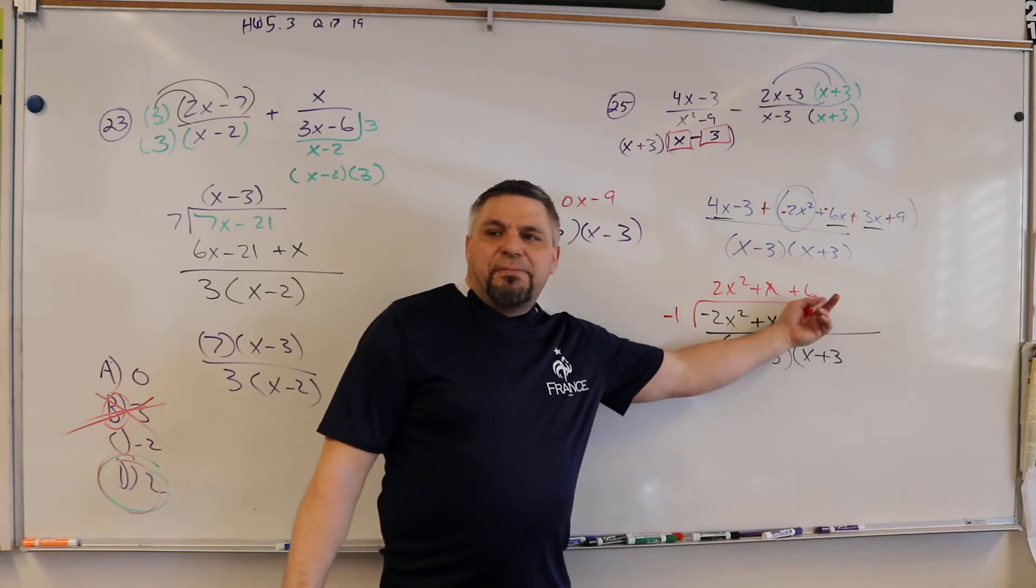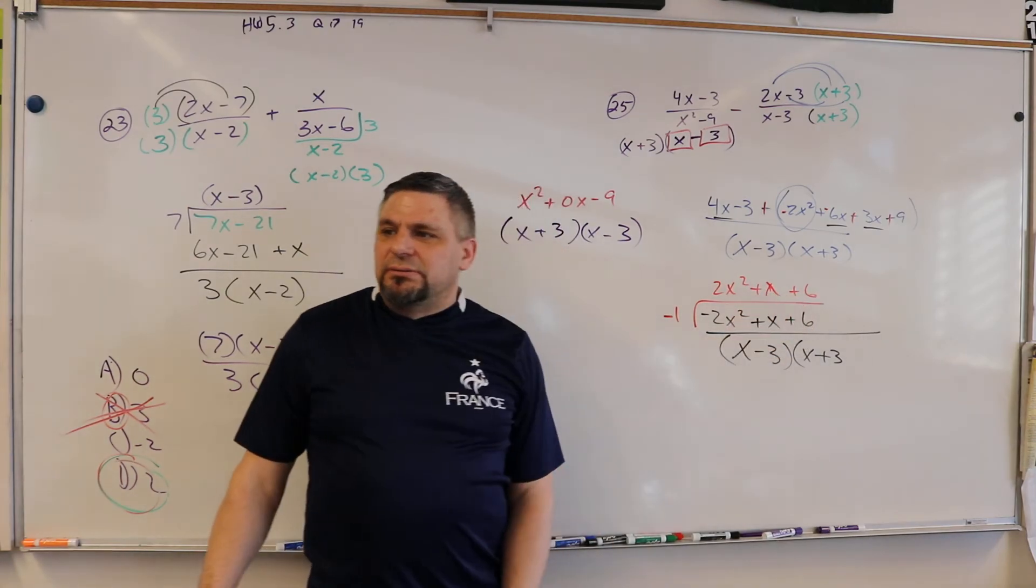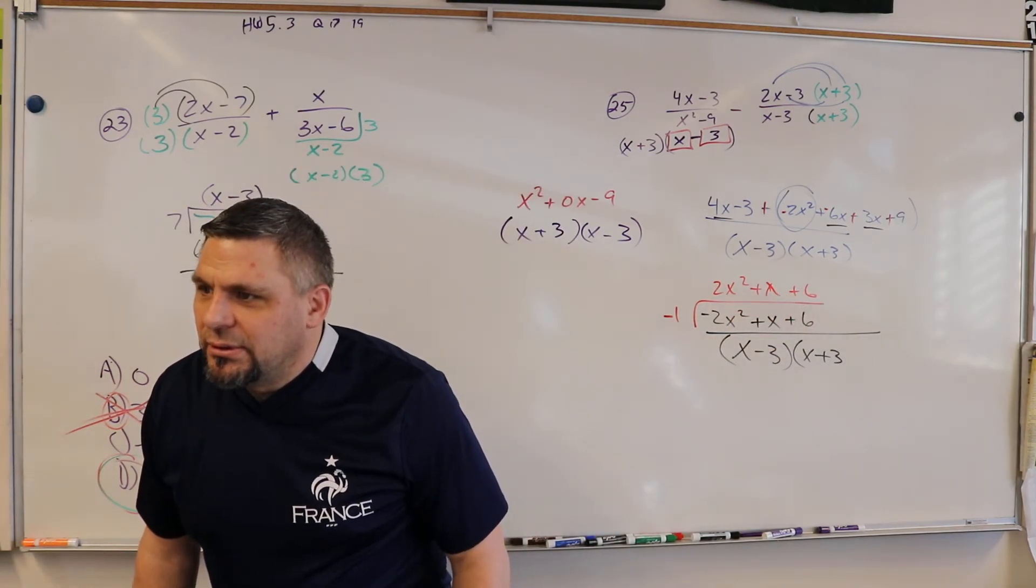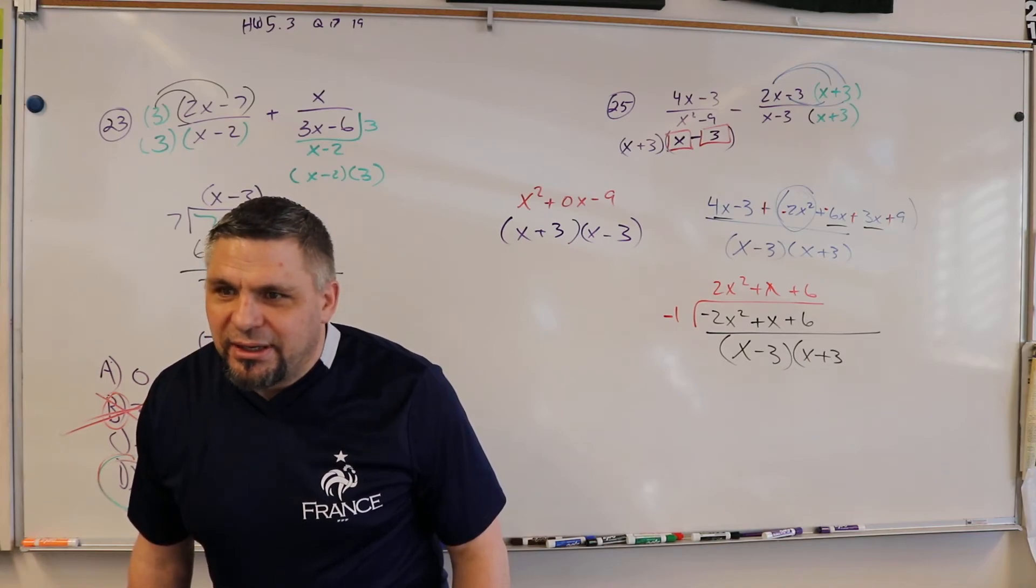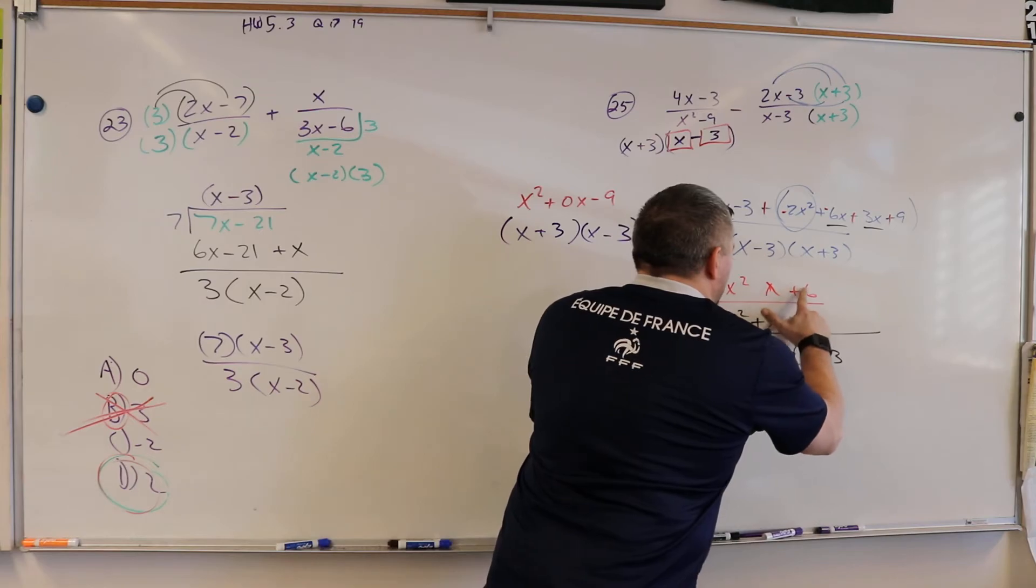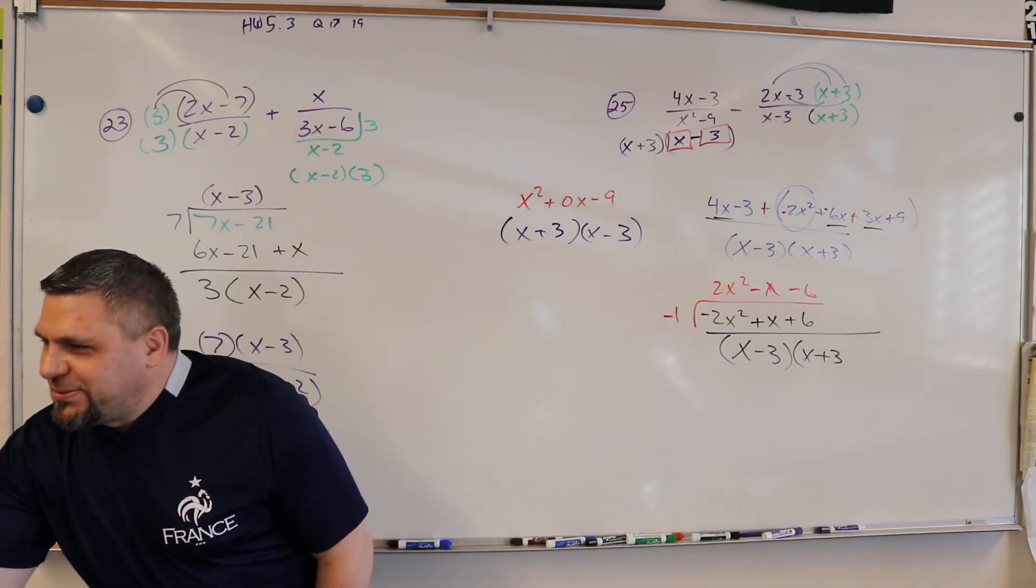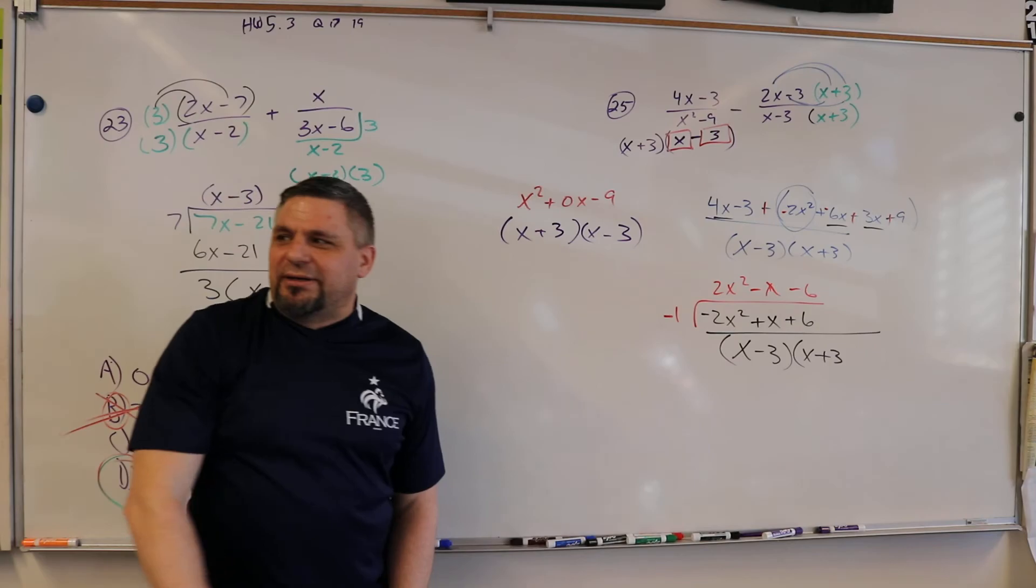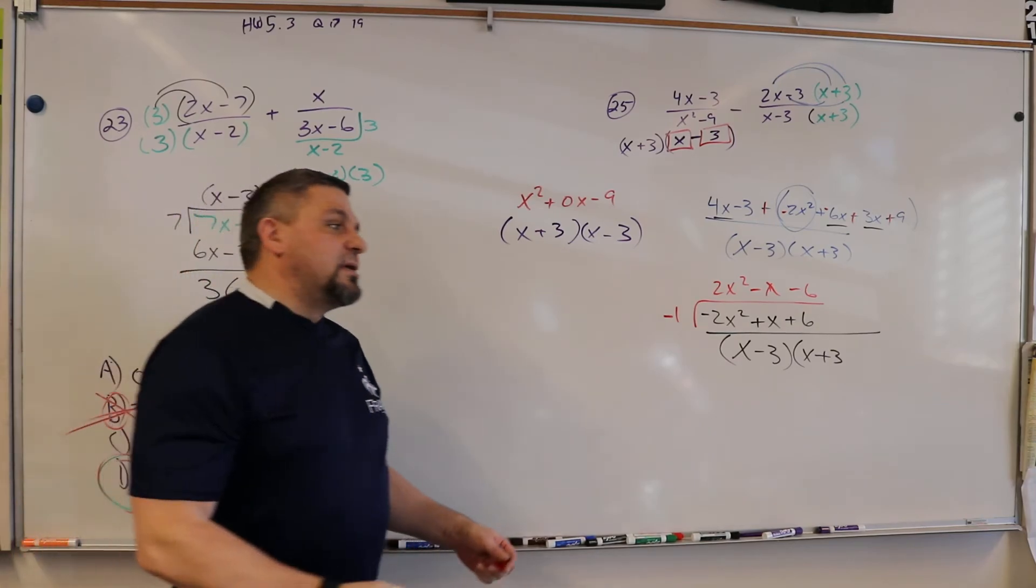All right. What multiplies to be 12, but adds to be 1? Nothing, right? Oh, wait, wait, wait. My bad, my bad, my bad. All right. What multiplies to be 12, and subtracts to be 1? 4 and 3. So yeah.